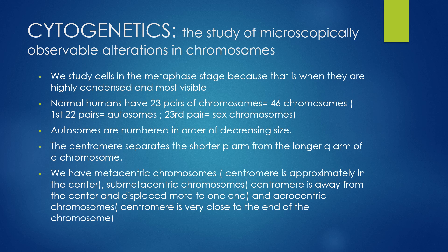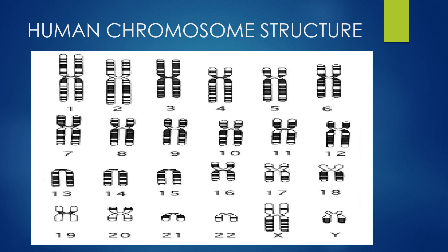There are different types of chromosomes based on the location of their centromere. A metacentric chromosome has the centromere approximately in the center. A submetacentric chromosome has the centromere displaced toward one end. An acrocentric chromosome has the centromere very close to the end. Autosomes are numbered in order of decreasing size, with chromosome 1 being the largest and chromosome 22 being the smallest, followed by our X and Y sex chromosomes.